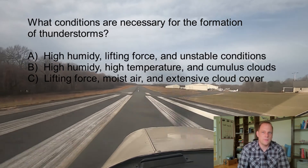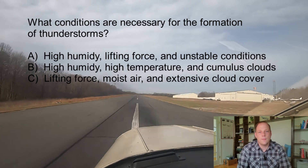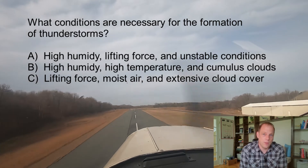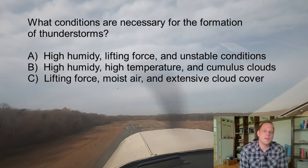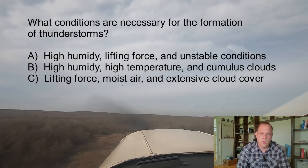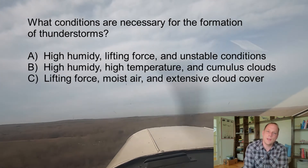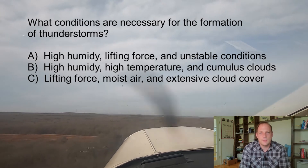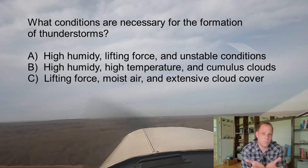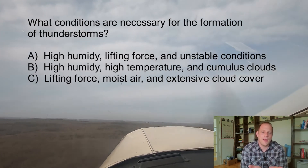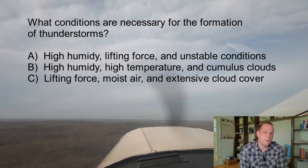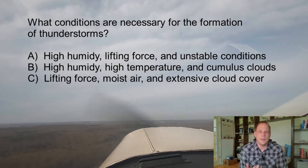Let's talk about why each of these is necessary for the formation of thunderstorms. The first one is lifting force. Thunderstorms need an initial boost to get the air rising. This can be something like the local uneven heating of the Earth's surface in the summertime resulting in an air mass thunderstorm, or it could be a front moving through which can produce widespread thunderstorms. So the first thing it needs is a boost.